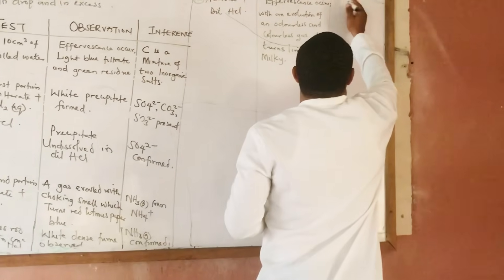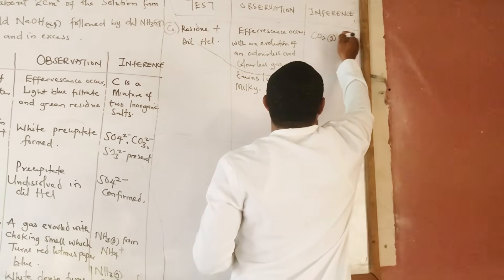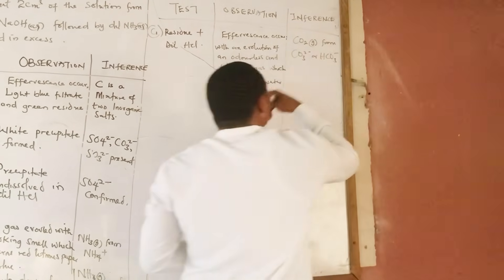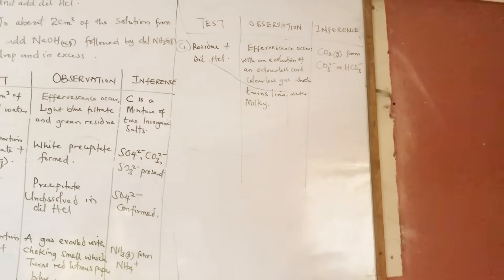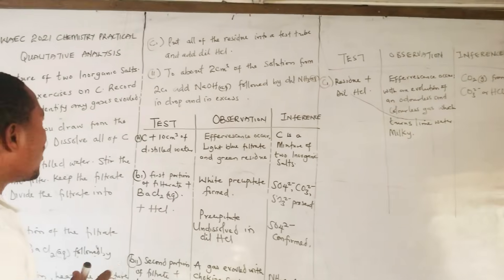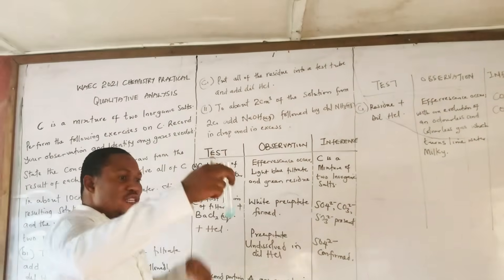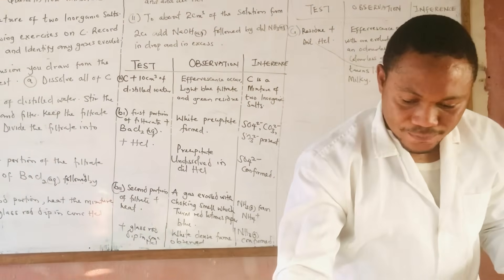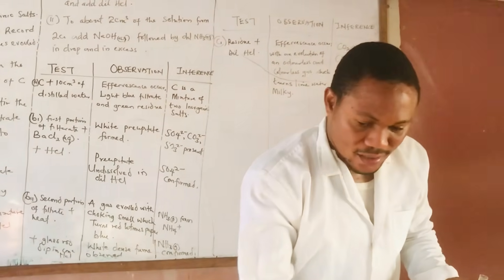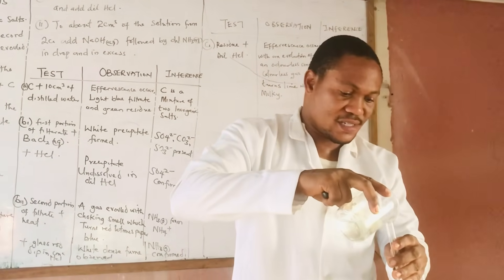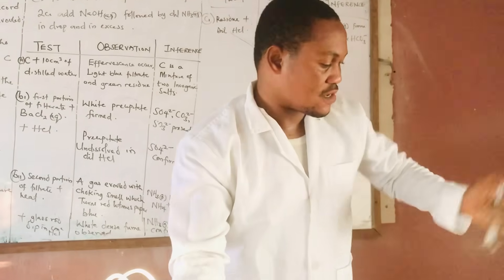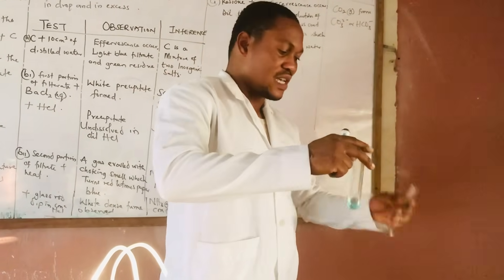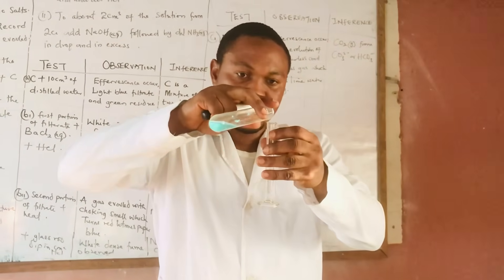The residue is a carbonate source because when HCl reacts with any carbonate — for example calcium carbonate — you get calcium chloride plus H₂O plus CO₂. So the carbon dioxide gas is what is causing that effervescence. The confirmatory test would be passing the CO₂ gas into limewater. To about 2 cm³ of the solution from test C(i), measure out two centimeter cubes.